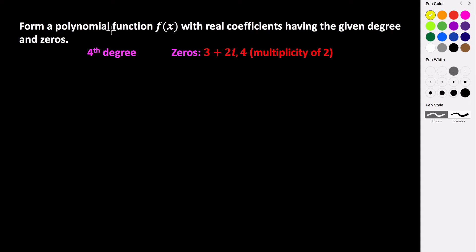In this example, we want to form a polynomial function f(x) with real coefficients when given the degree and the zeros. Because this is a fourth-degree polynomial, we know we should have four zeros. But in this case, we're only given three. We're given four twice — that's what it means to have a multiplicity of two — and three plus two i.